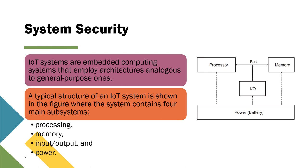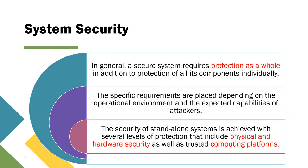In an IoT system, there are many embedded computing systems that employ architectures analogous to general-purpose ones. A typical structure for the IoT system includes the processor, memory, input-output, and power sources such as a battery. When we want to secure the system, we require protecting the system as a whole, not just protecting individual components. The specific requirements applied depend on the operational environment and the expected capability of the attacker.